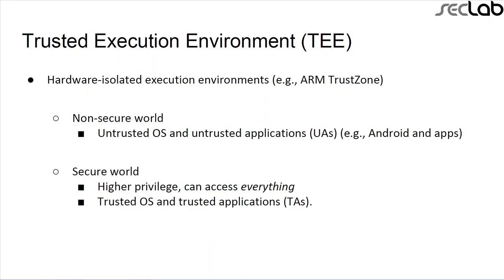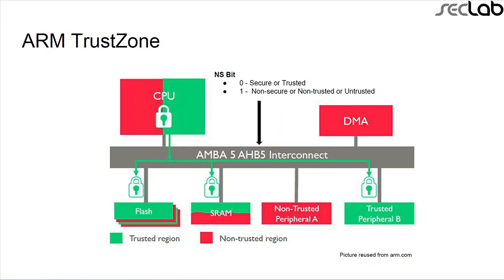This is a trusted execution environment implemented by ARM, called ARM TrustZone. As you can see, every peripheral on the system has two modes — secure and non-secure — as indicated by green and red. The transition between secure and non-secure is controlled by a bit line on the bus called the NS bit line. NS means non-secure: if the bit line is zero, the system is in secure mode; if one, the system is in non-secure mode.